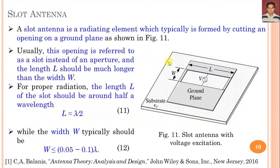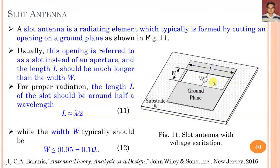Here you can see this is a substrate having dielectric constant epsilon-r and height h. On this substrate, we are taking one ground plane with length Lg and width Wg. In that ground plane, we are cutting a slot — this opening is called a slot, also referred to as an aperture.